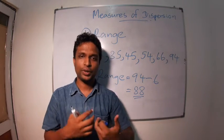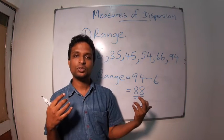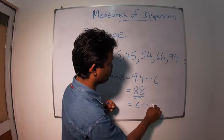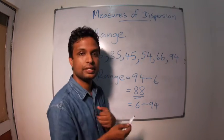So we have a range of 88 in this distribution. Oh yes, you can write this as 6 to 94 is the range.